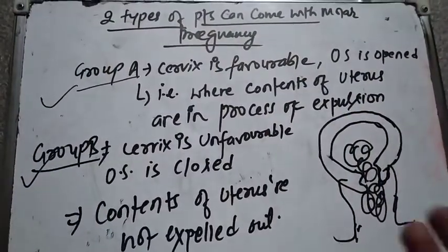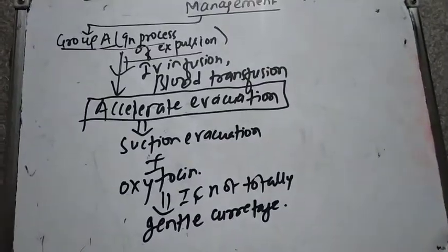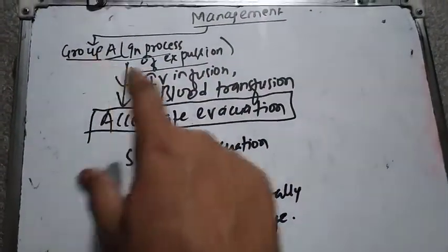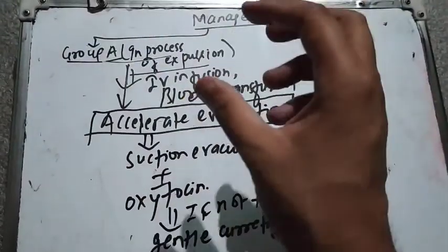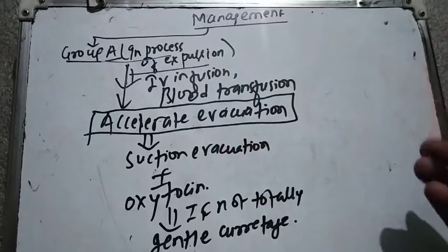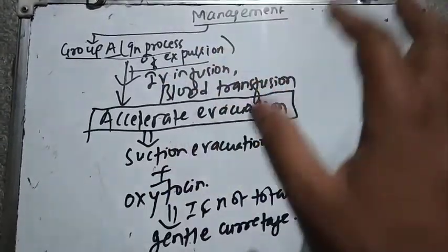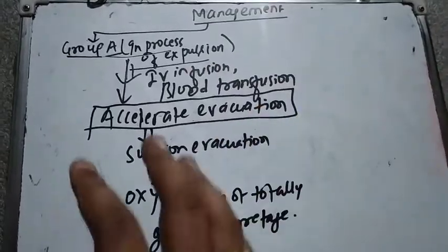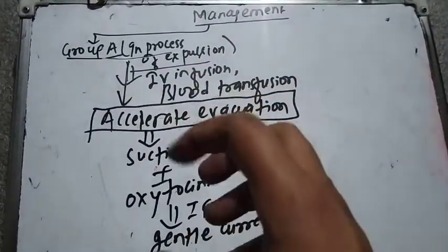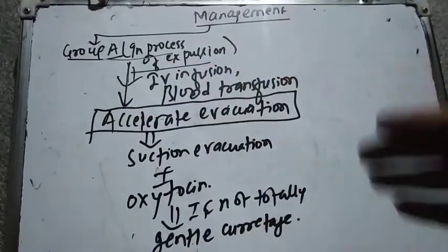We have to treat both Group A and Group B. For Group A patients, we correct the anemia with IV infusion and blood transfusion, and then proceed to evacuate and curettage the uterus.